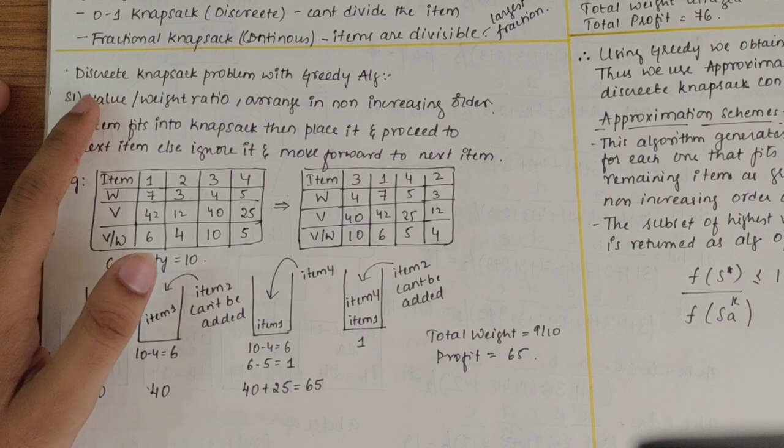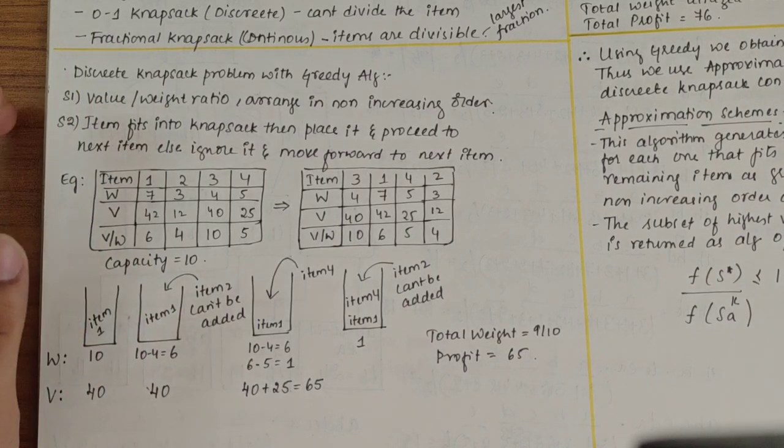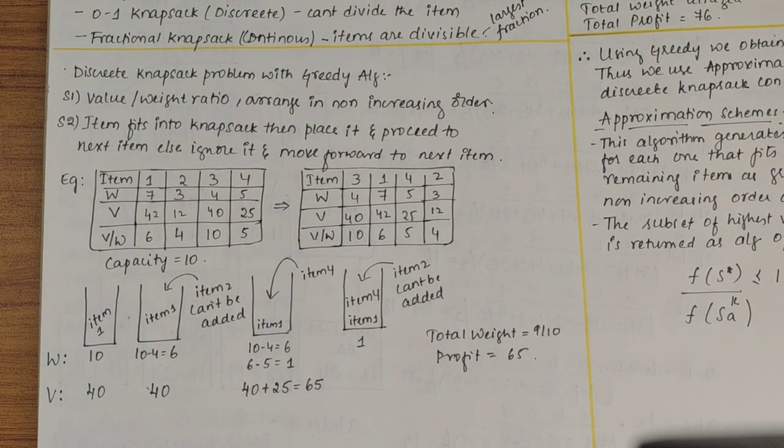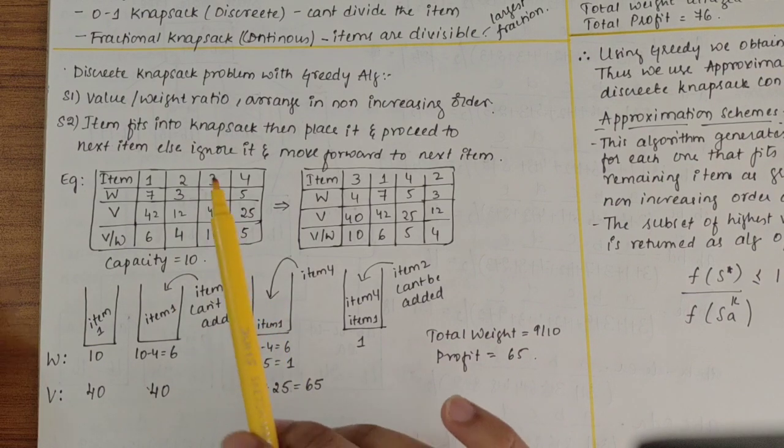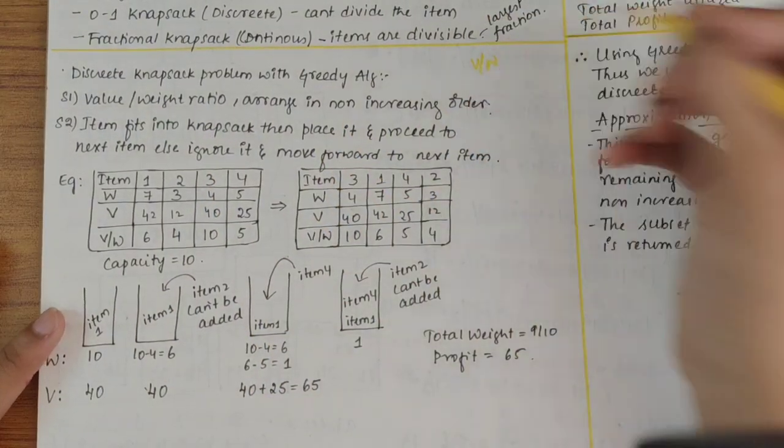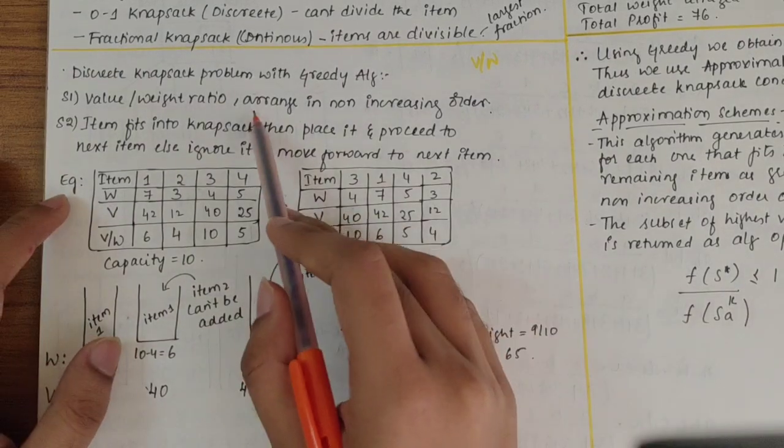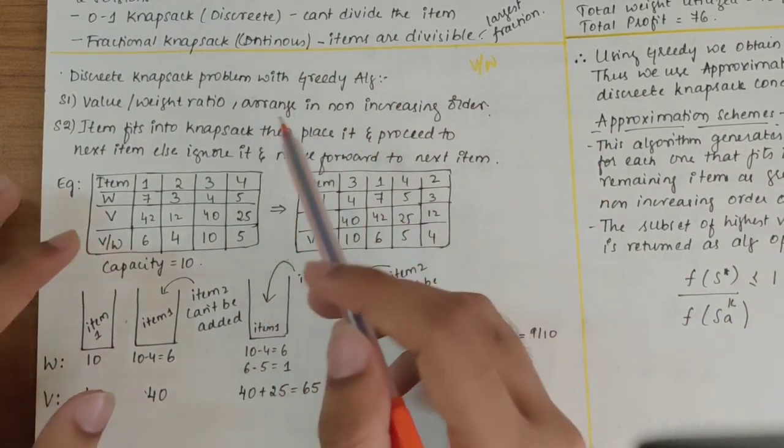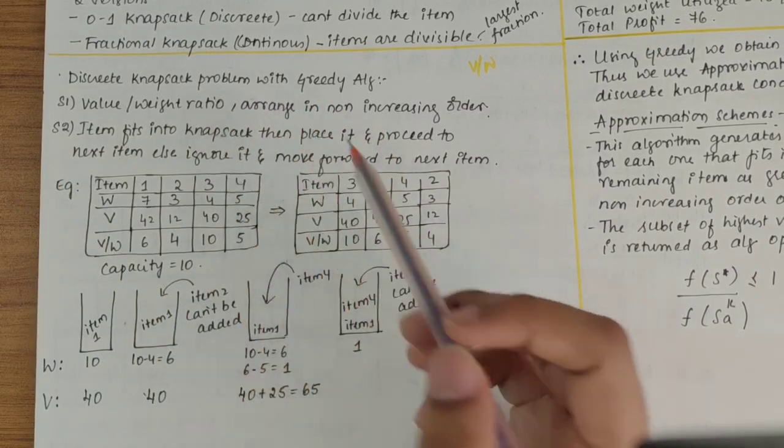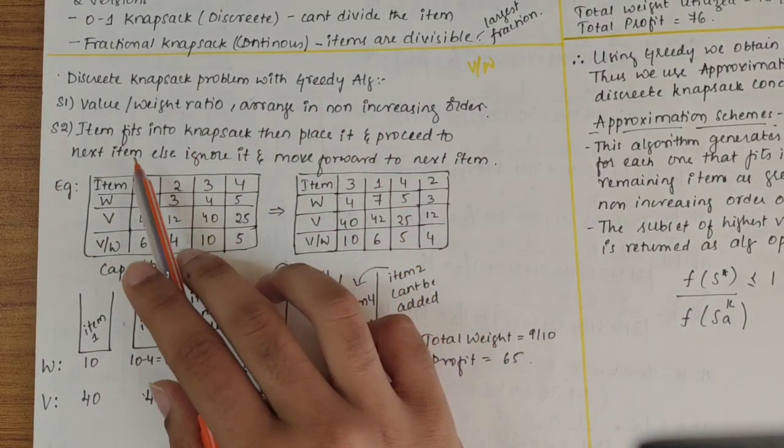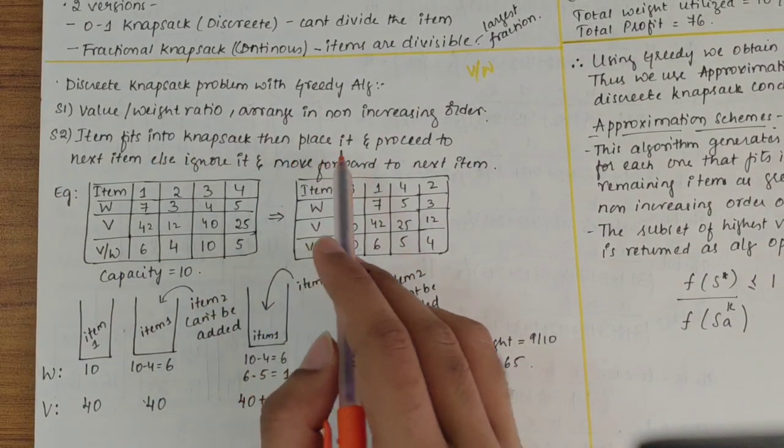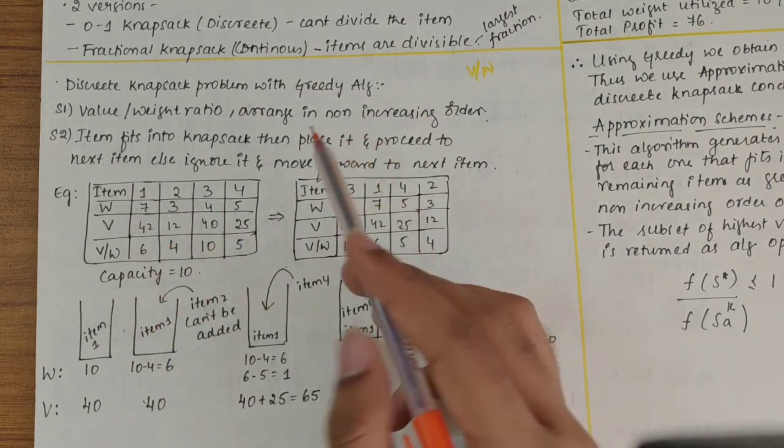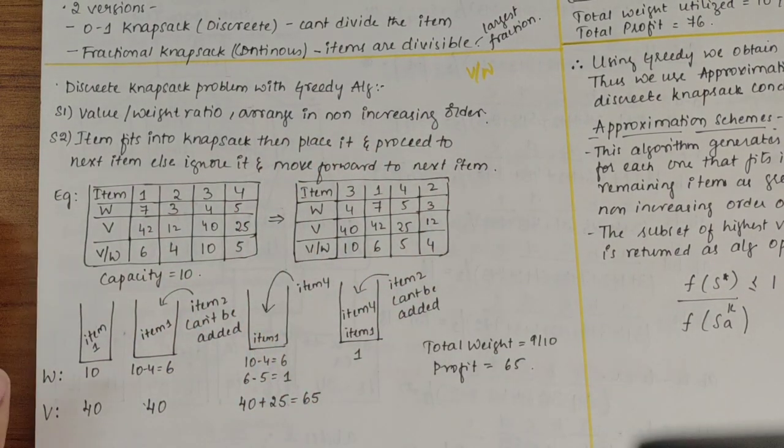Let's look at the discrete knapsack problem with greedy algorithm. First step is to compute the value to weight ratio, V by W. Second, we arrange them in non-increasing order. After that, if item fits in the knapsack, then place it and proceed to next item. Else, ignore it and move forward to next item.